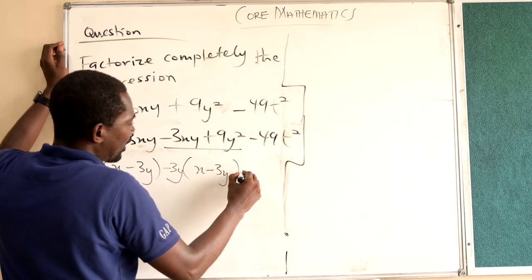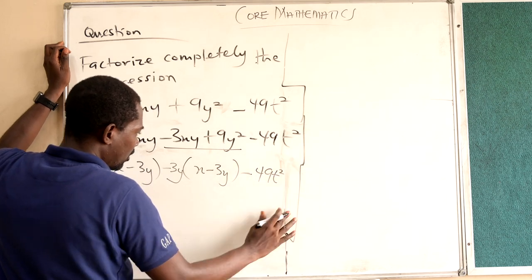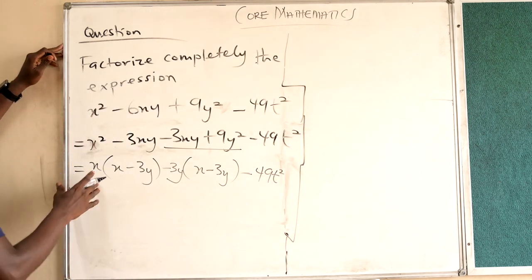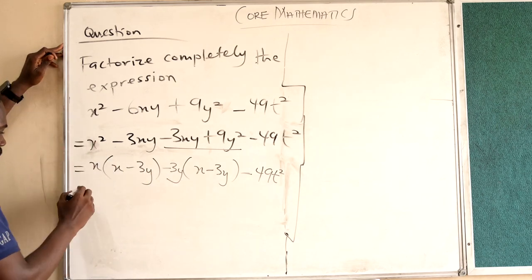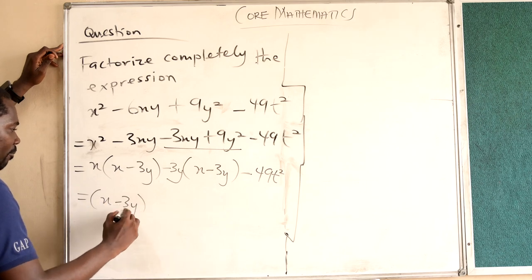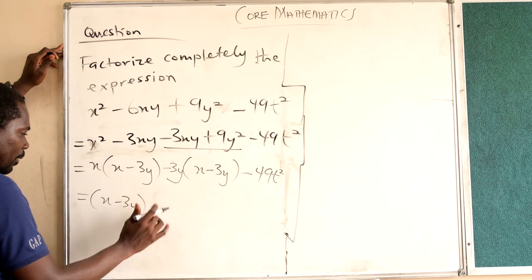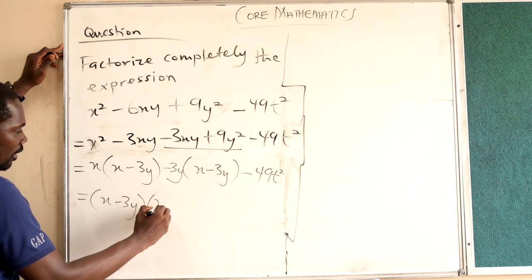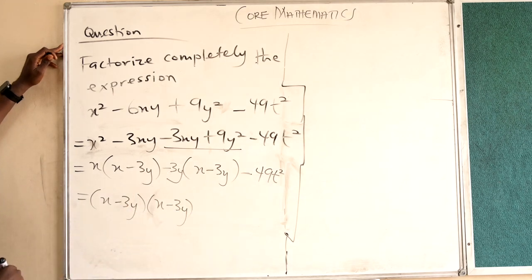Now with the negative 49t squared, you repeat the same thing. What you see in front of the brackets, you put them together: x here and negative 3y here. Now what we have in brackets, they are the same. So we just pick one: x minus 3y. We have two, we just pick one of it.